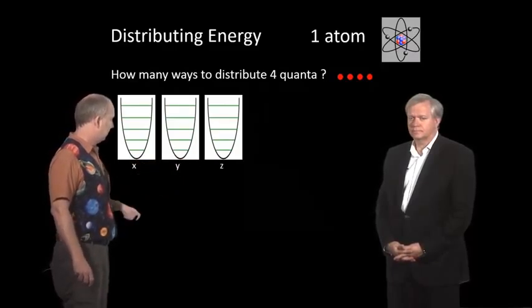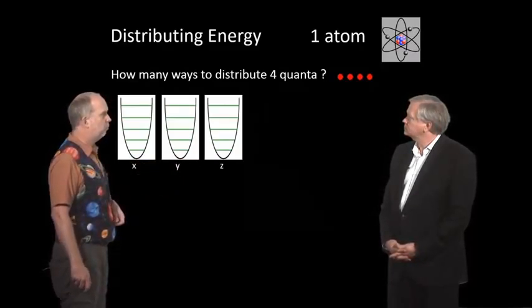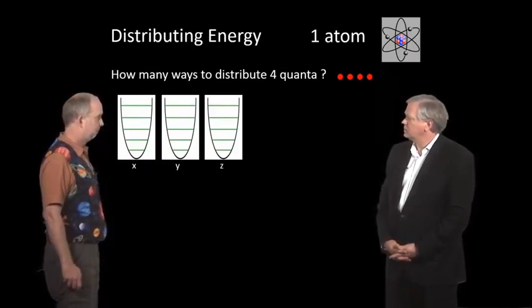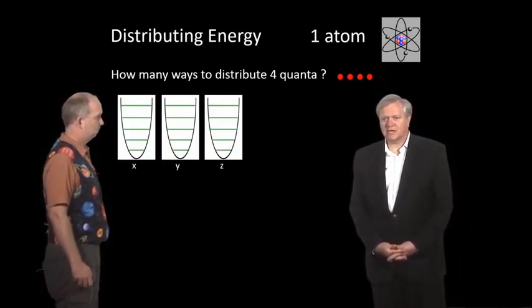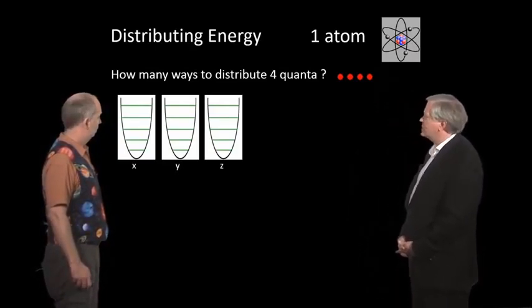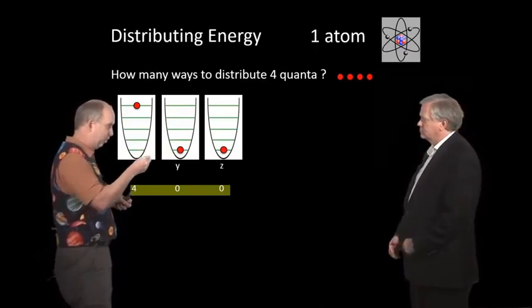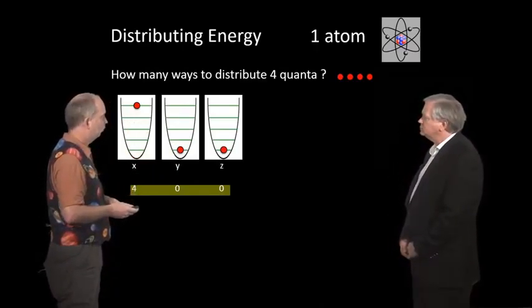So we've got the three oscillators, x, y and z, and how many ways can we put four quanta in there? Okay, so we just need to start counting, should we start with the x there? Yeah, so we could put four quanta here and have these two at the ground state. So in that case it'll be moving enormously along the x-axis, but not along the y or the z. So that's one possibility.